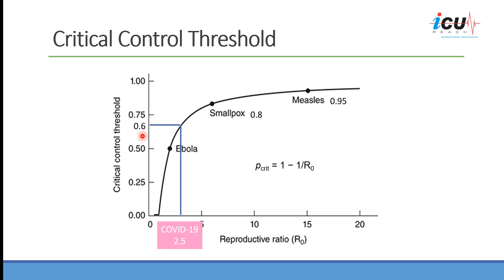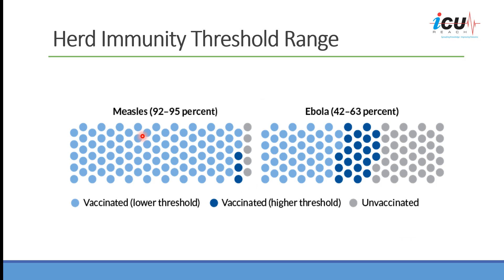This means we have to vaccinate 60% of the population to achieve herd immunity for COVID-19. For countries that decided to pursue herd immunity to control the pandemic, it means they let the virus disseminate among people so they get infected and develop immunity. When it reaches a level of 60%, it will provide protection to others. Since R0 is always a range, we have a threshold range: measles is 92% to 95%, Ebola is 42% to 63%, and COVID-19 is estimated at 55% to 62%.